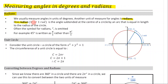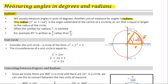One radian — written as one superscript c or one rad — is the angle subtended at the center of a circle by an arc that is equal in length to the radius of the circle. Looking at the diagram, this means when the arc length equals r, the same as the radius r, the angle created is called one radian.